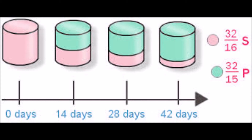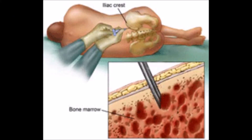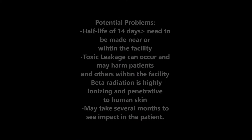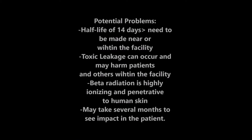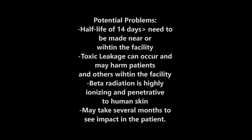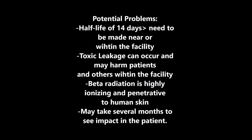P-32 has a short half-life of 14 days and is less harmful to the patient when injected into the body. However, having a short half-life means the radioisotope must be made nearby or in the facility of a hospital. Potential problems such as toxic leakage can occur.